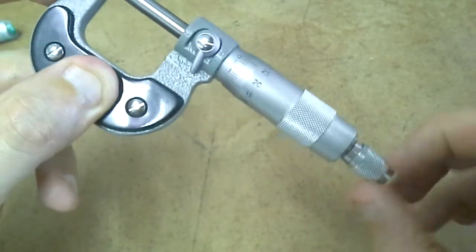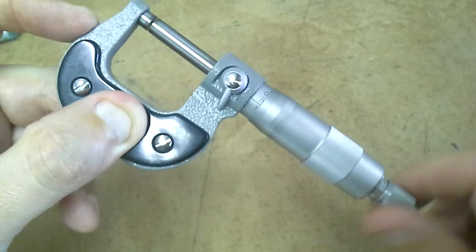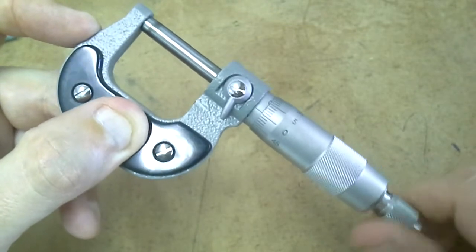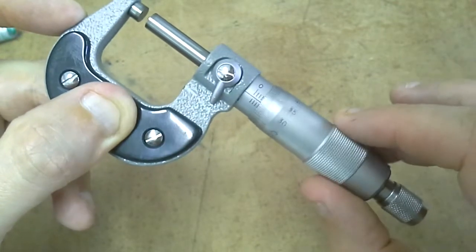So how you do it is you put whatever you need to measure inside here, you'll turn it around and you'll get a clicking sound and that's telling you just to stop and it stops you putting pressure on here.